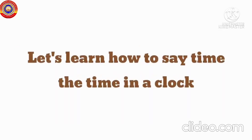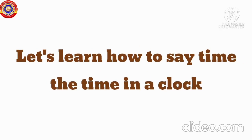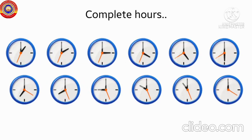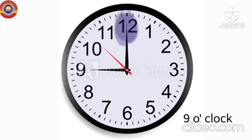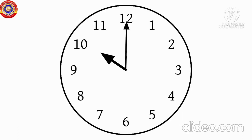Now let's learn how to read complete hours — 1 o'clock, 2 o'clock, 3 o'clock, and so on. At 9 o'clock, the minute hand is at 12 and the hour hand is at 9. See, children: the long hand is pointing at 12 and the short hand is pointing at 10. Can you tell the time? Yes — 10 o'clock! Good.